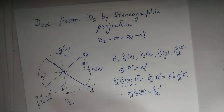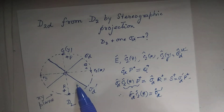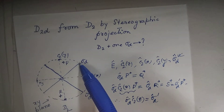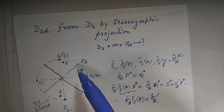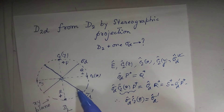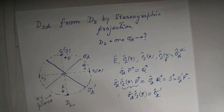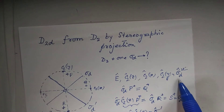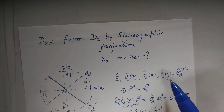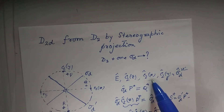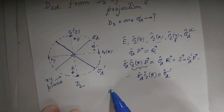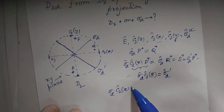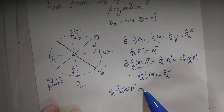Thus we see that insertion of one sigma_d plane necessitates the presence of another dihedral plane. Our multiplication is not yet complete — sigma_d is to be multiplied to C2x.